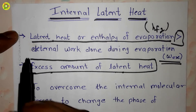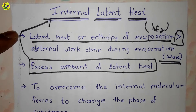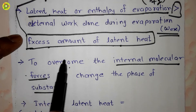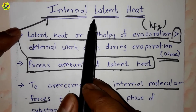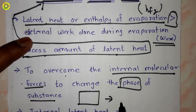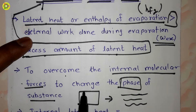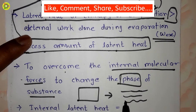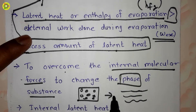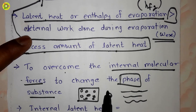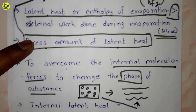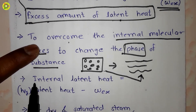This excess amount of latent heat is called internal latent heat. The internal latent heat is required to overcome the internal molecular forces in order to change the phase of a substance. For example, if this is a solid substance and we want a phase change to occur, we need to break down the intermolecular forces of the molecules of that solid substance. When this happens — due to internal latent heat — we obtain the liquid substance.